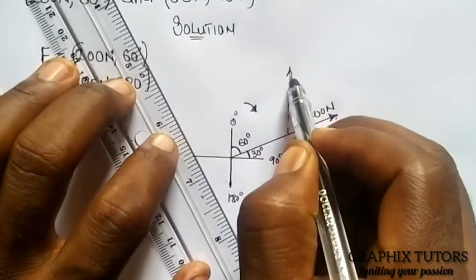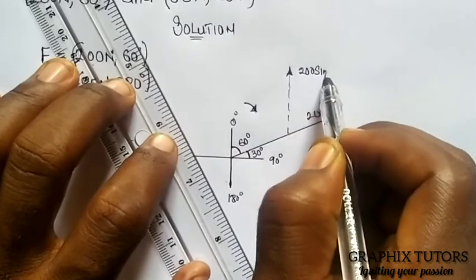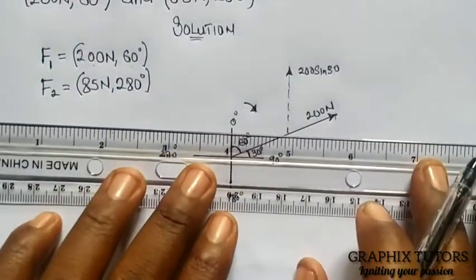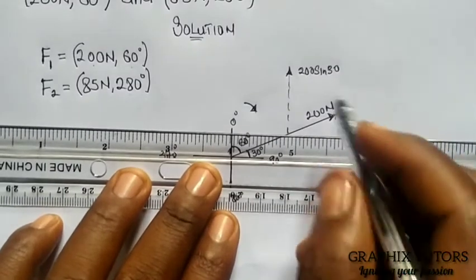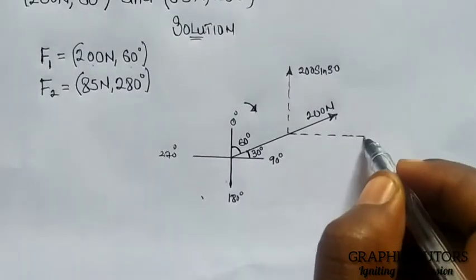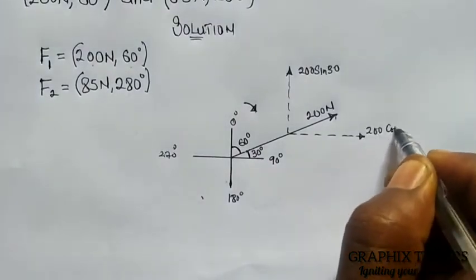Which will give me 200 sine 30. And also I'll be having my horizontal component, which will be 200 cos 30.